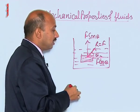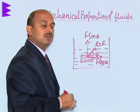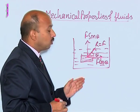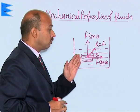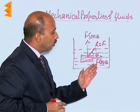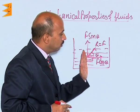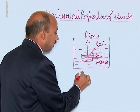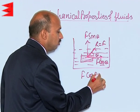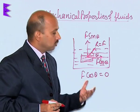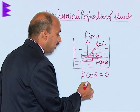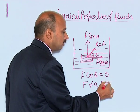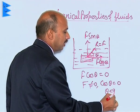Since the liquid is at rest and F cos theta is acting tangentially, the liquid should move in that direction — because liquid has no tendency to oppose any tangential force. But since the liquid is at rest, there is no motion due to F cos theta. Therefore F cos theta must equal zero, which means cos theta equals zero and theta equals 90 degrees.